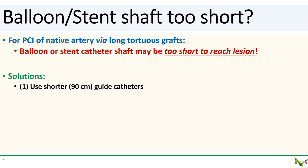There are three possible solutions. The first and easiest is to simply reach for a shorter guide catheter — most of the standard shapes are available in 90 centimeter lengths.